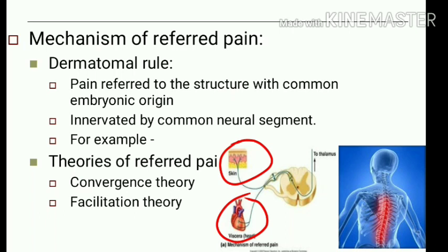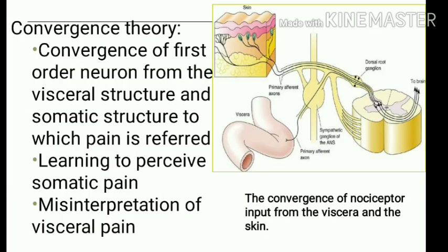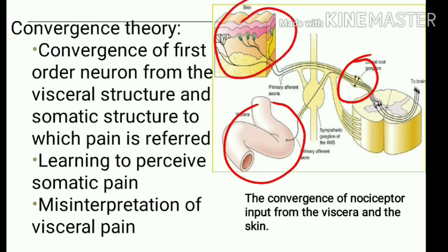There are two theories of referred pain: the convergence theory and the facilitation theory. In the convergence theory, first-order neurons from the viscera and from the somatic structure to which pain is referred both enter the spinal cord at the same level and converge on the same spinothalamic neuron. Because we are trained to perceive somatic pain, there is misinterpretation of the visceral pain as somatic pain.